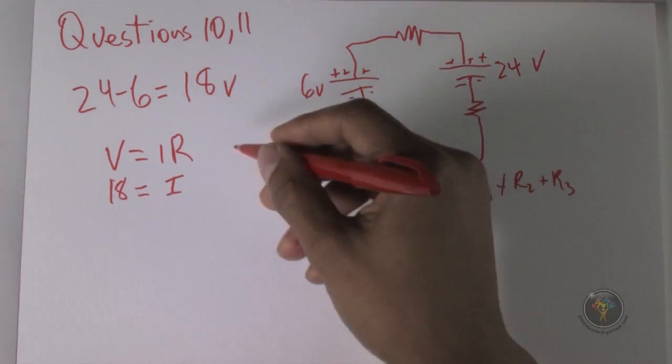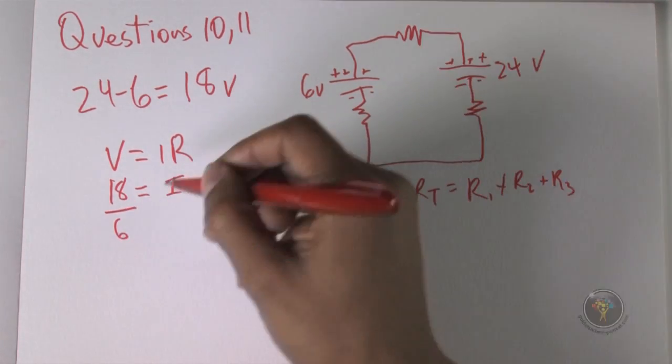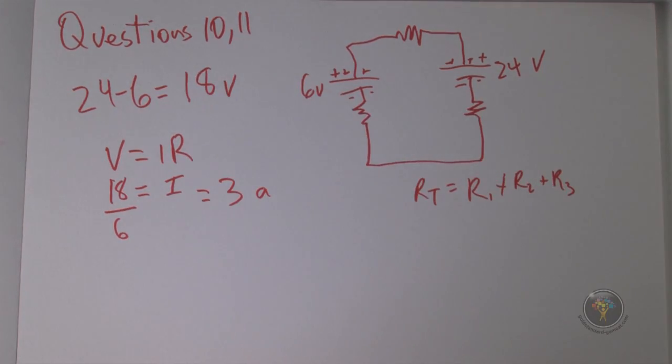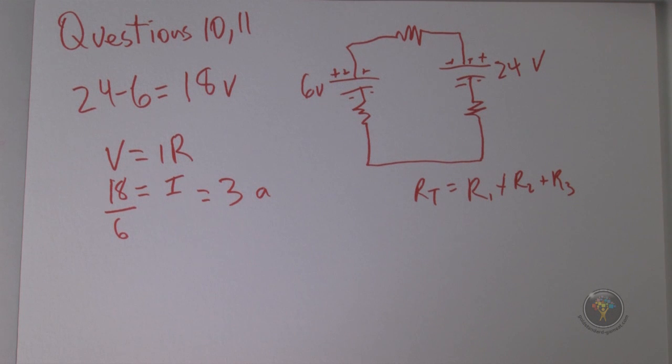So the total resistance is 6 ohms and so that means that we have 3 amps or 3 amperes of current.